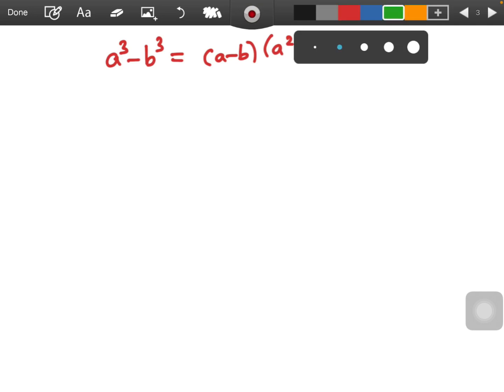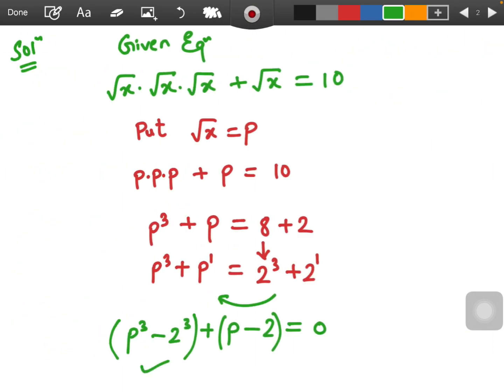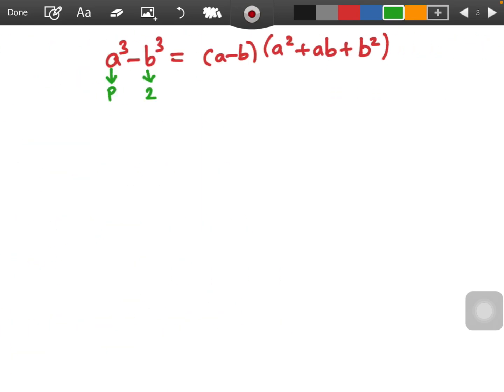Now in our problem what will be a? In place of a actually we are going to put p and in place of b it will be 2. So coming back to the previous step here we are applying the formula and we are going to put p minus 2 as it is. So I am writing here p minus 2 as it is no change and in p cube minus 2 cube we are applying this formula. So a minus b will be p minus 2, a square means p square, ab means 2p plus b square 2 square is 4. So in this way in p cube minus 2 cube we have applied this formula.